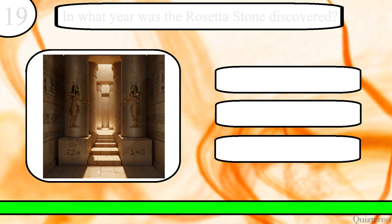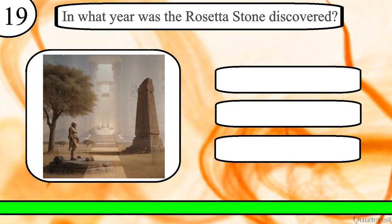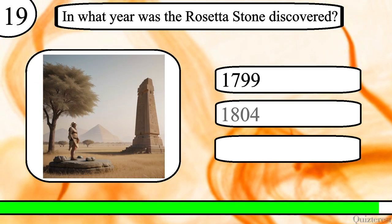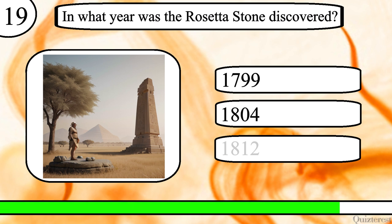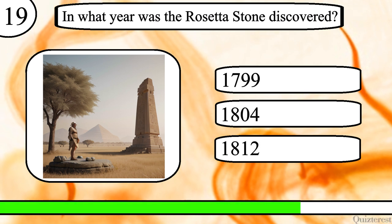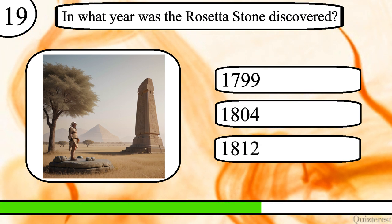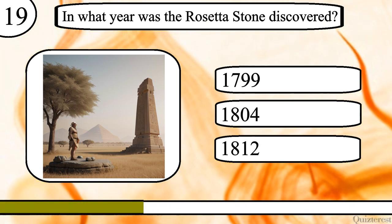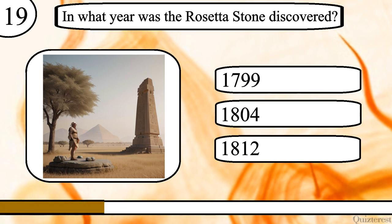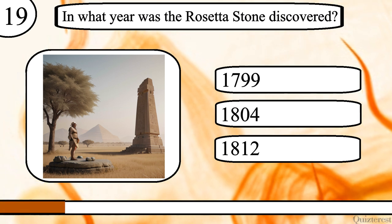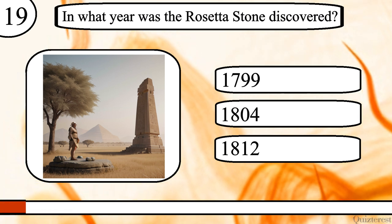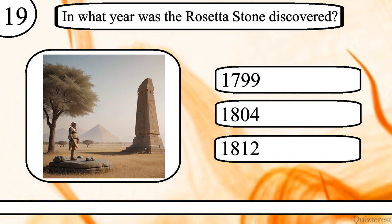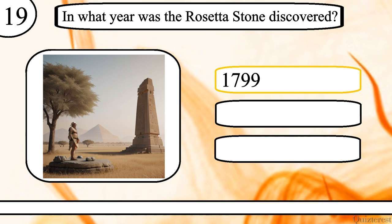Question 19. In what year was the Rosetta Stone discovered? 1799, 1804 or 1812? The correct answer is 1799.